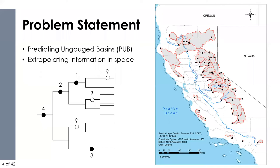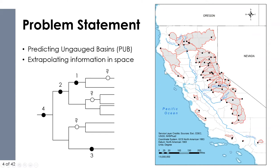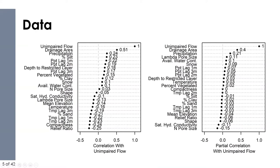We have these values calculated at 67 basins in California — mostly Sierra Nevada, some coastal, and some Southern California basins — from the California Data Exchange Center. The rest of the dataset is basin characteristic and climate data: things like drainage area, precipitation, soil, and more. I've described how I processed this data in the index to my dissertation.